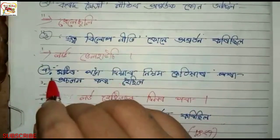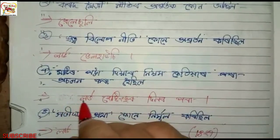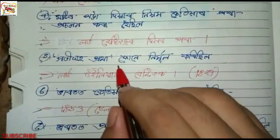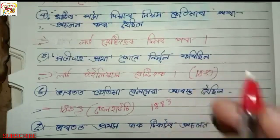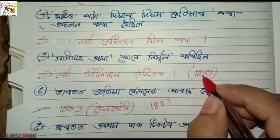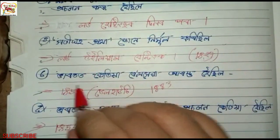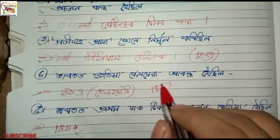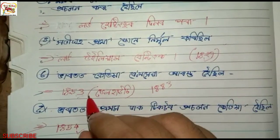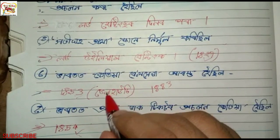My next question is about Lord Hastings. My next question is about Lord William Bentinck. And in 1853, the governor general — the name of the country.